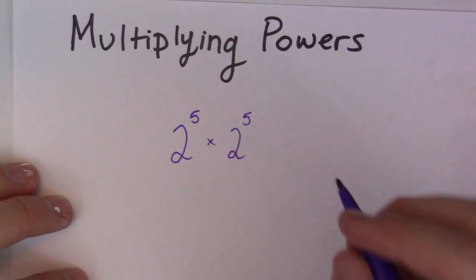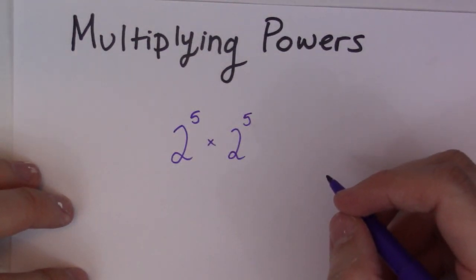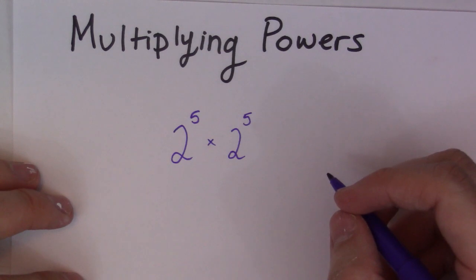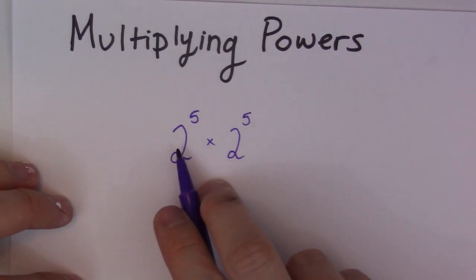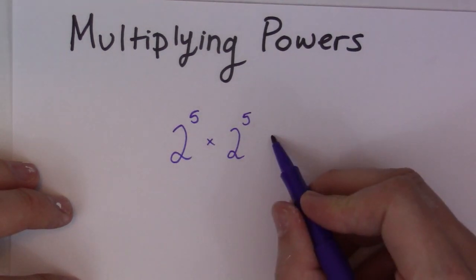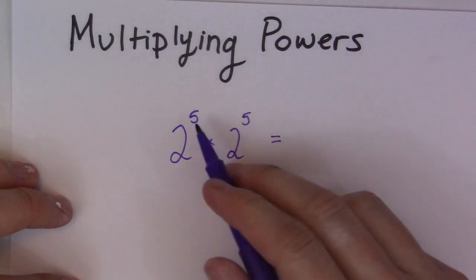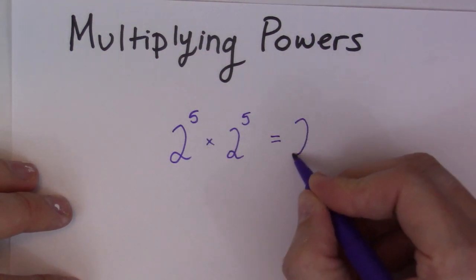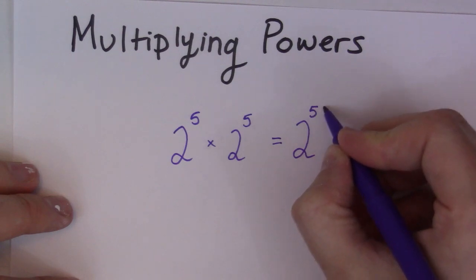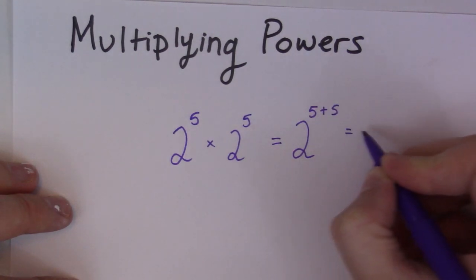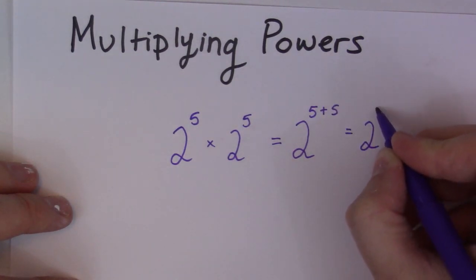then we can use our law for multiplying powers with the same base. So, that's the key. This is base 2. This is base 2. So, what I can do in those situations is I can add my powers. 2 to the 5 plus 5 is equal to 2 to the 10.